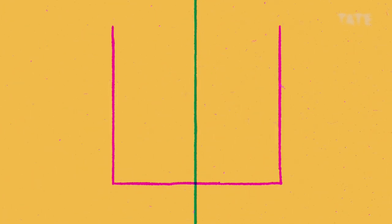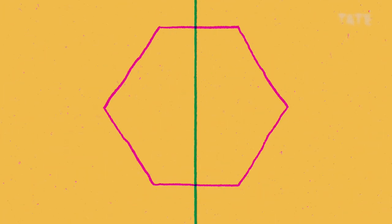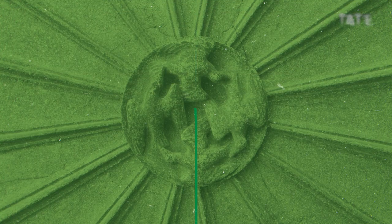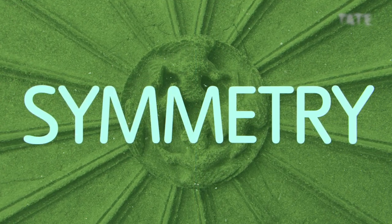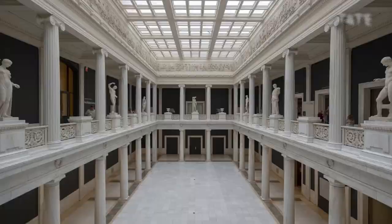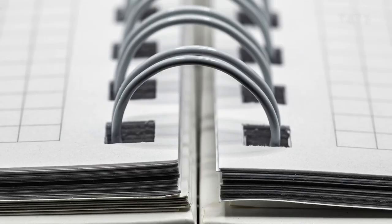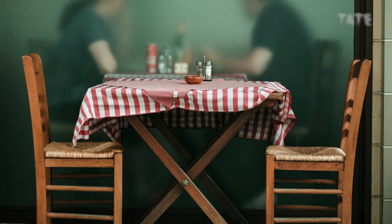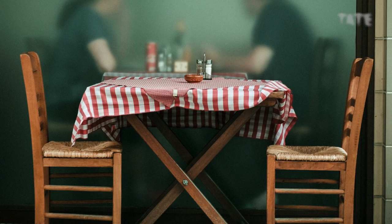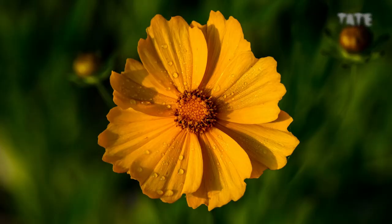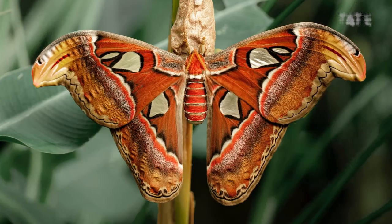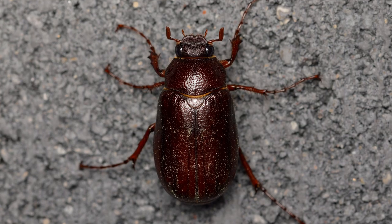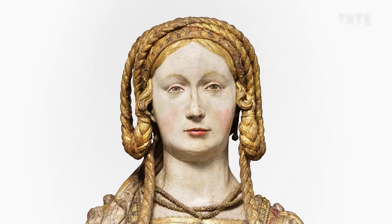How many of these shapes are exactly the same on both sides? In geometry, this is called symmetry. Symmetry is all around — in tables and chairs and flowers and insects like butterflies and beetles, and sometimes in faces.